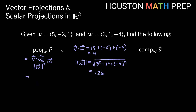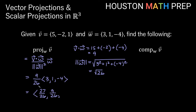Plugging in, the vector projection of V onto W equals 9 over 26 times vector W (3, 1, -4). Distributing, that gives us (27/26, 9/26, -36/26). Reducing the last component by 2, we get (27/26, 9/26, -18/13). This vector points in the direction of W but only as far as V points in the direction of W — this is our vector projection.